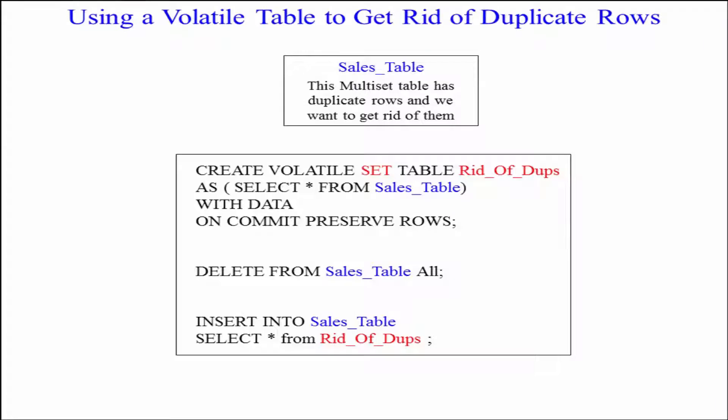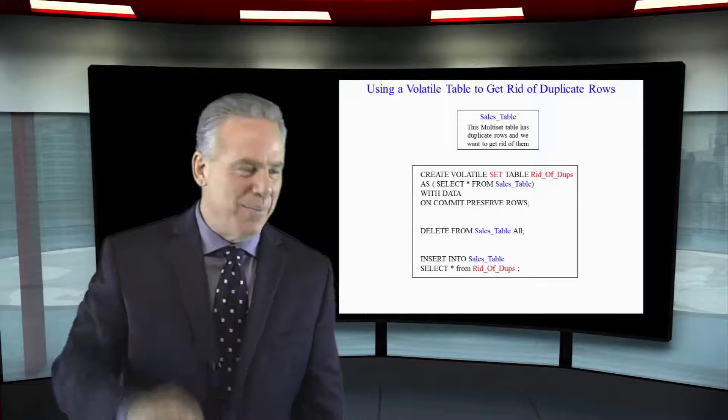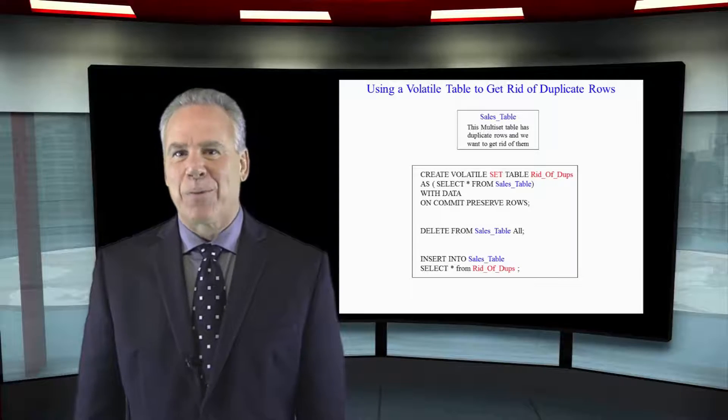Here's how you might use a volatile table to get rid of the dupes you made a mistake on by loading twice. Watch what I do here. I create a volatile set table called rid_of_dupes as select everything from the sales table with data on commit preserve rows. It brings that data all the way over and gets rid of the duplicate rows because it's a set table. Now that you've got this where you want it, delete everything from the sales table and insert back into it: select everything from rid_of_dupes. You have fixed the problem.